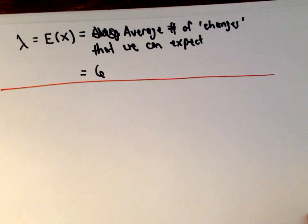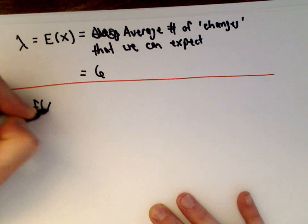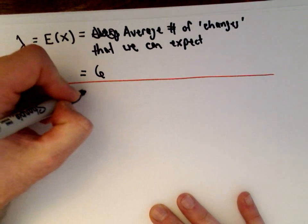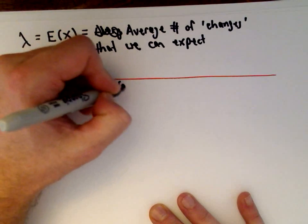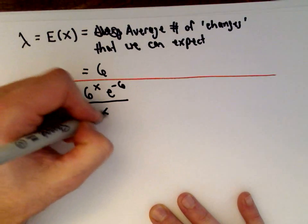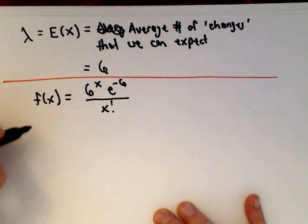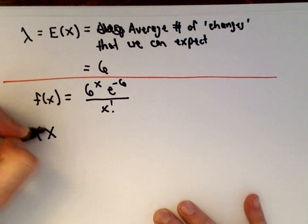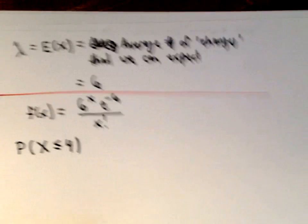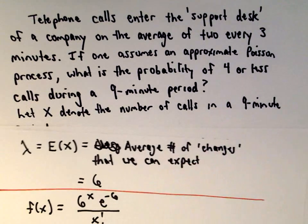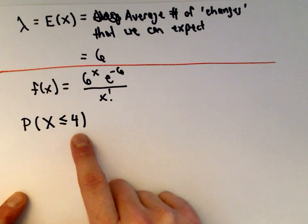In this case, since lambda equals 6, our probability mass function is f(x) = 6^x · e^(−6) / x!. We want to calculate the probability that x is less than or equal to four, since we want four or fewer phone calls during the nine-minute period.